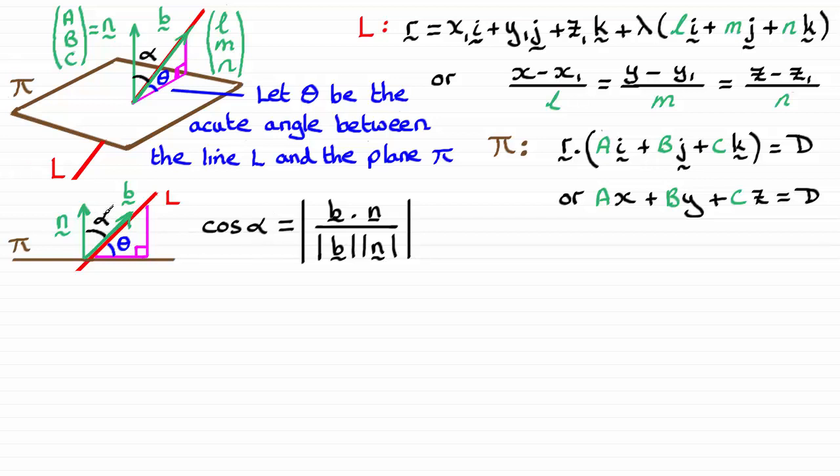And then once I've worked out alpha, it's a simple case of just taking it away from 90 degrees, or pi upon 2 radians if you're working in radians, to get the angle theta. If you're working in degrees, then it's just going to be 90 degrees minus alpha.